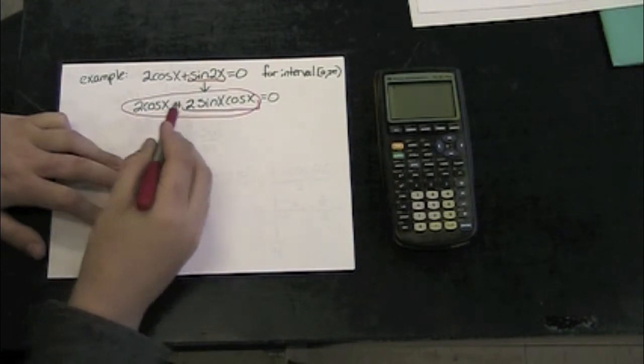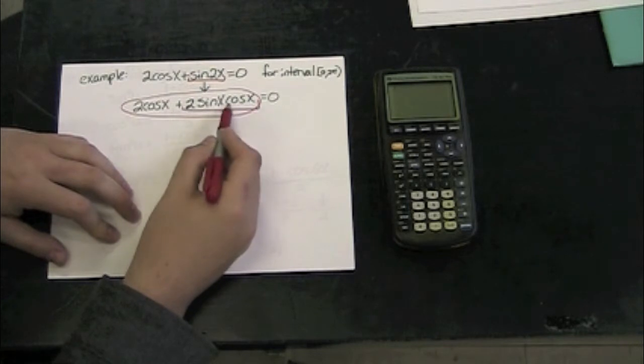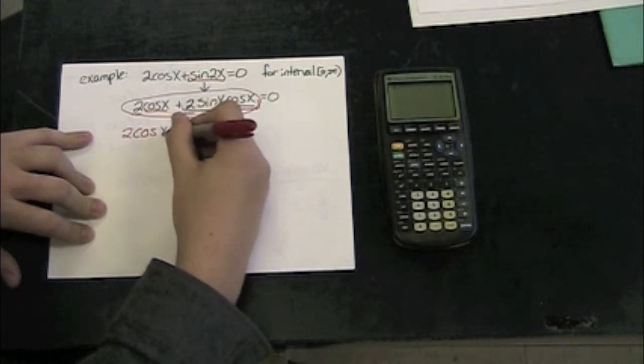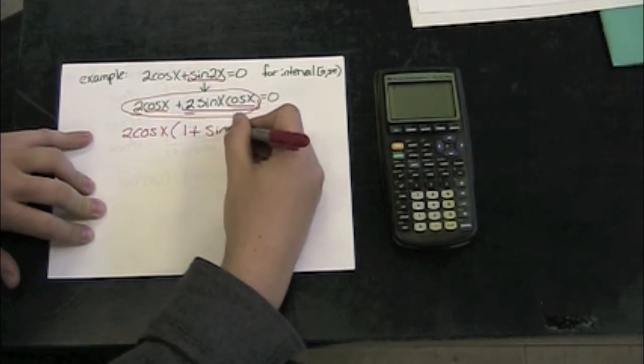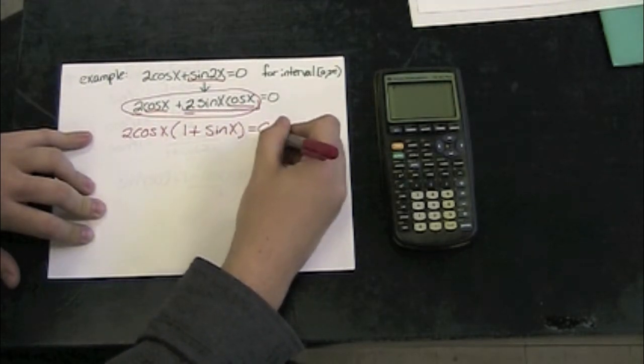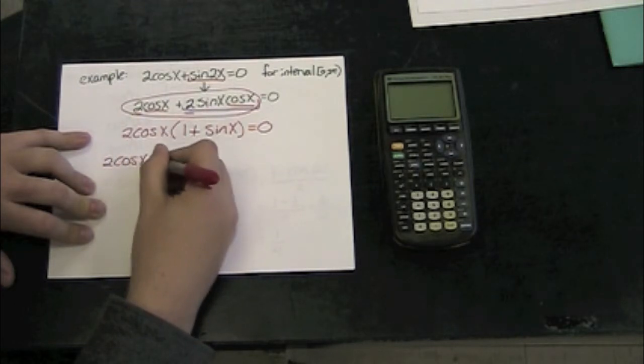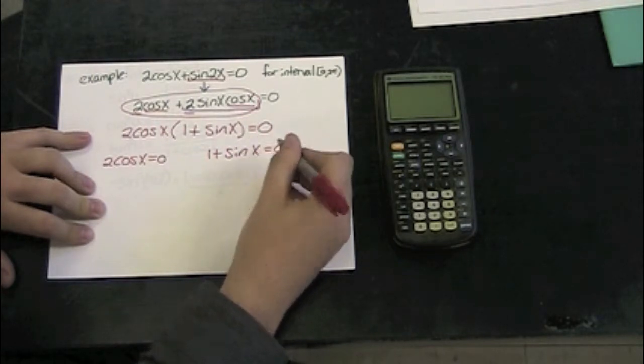If I take a look at this, I can see that each term is going to have a cosine and a 2. Let's factor both of those out and see what happens. So I've got 2 cosine of x times 1 plus sine of x equals 0. If I set both of these equal to 0, so 2 cosine of x equals 0 and 1 plus sine x equals 0.